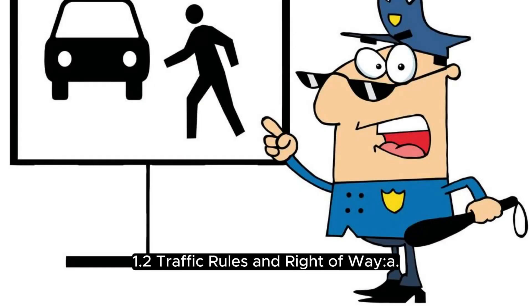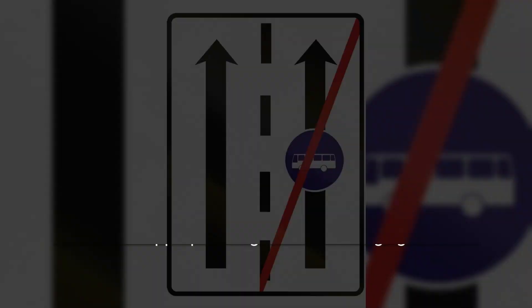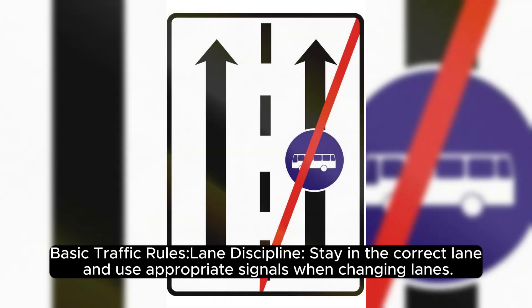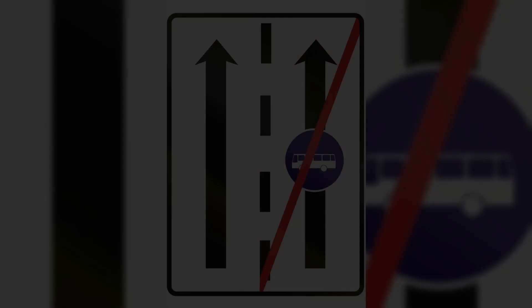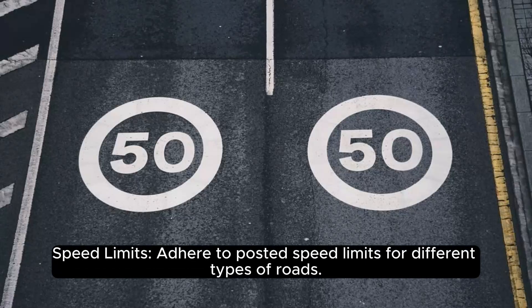1.2 Traffic Rules and Right-of-Way. Basic Traffic Rules. Lane Discipline: Stay in the correct lane and use appropriate signals when changing lanes. Speed Limits: Adhere to posted speed limits for different types of roads.